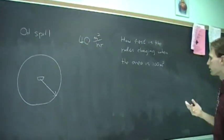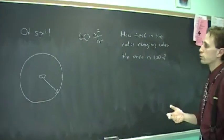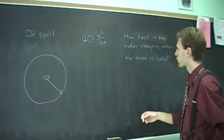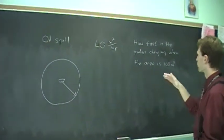The question asks, how fast is the radius changing when the area is 100 square meters? So as the area increases, so does the radius of the spill. You have to symbolize what we need here.